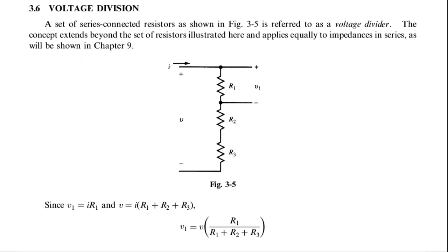Next is the voltage division rule. There is a formula for the voltage divider. We have seen that if resistors are connected in series, we get the voltages as follows. We found V1 = I × R1 because I is common in a series connection, and V2 = I × R2. If you want to find out the individual voltage across a resistor, you can write V1 = I × R1, and the total voltage V = I × (R1 + R2 + R3).